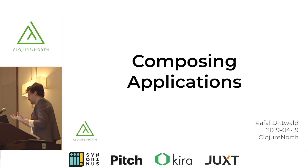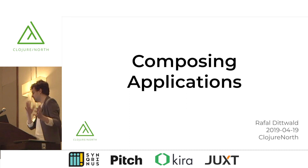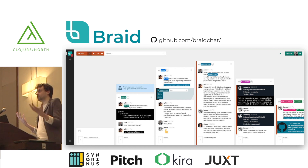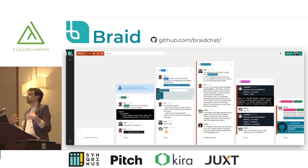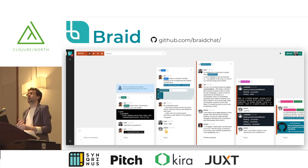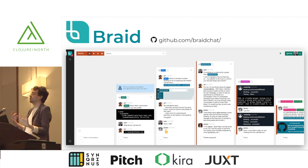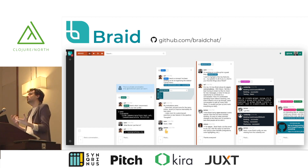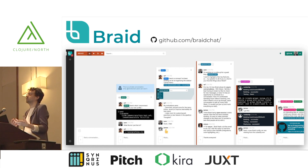One of the projects I work on is a team chat app called Braid. It's written in Clojure and ClojureScript, it's open source, and it's meant to be hackable. One of the things we want is to make it easy for people to contribute and make it work the way they want — kind of like Firefox plugins, or rich plugin ecosystems like WordPress or Drupal, that made it possible to extend and do interesting things with those applications.